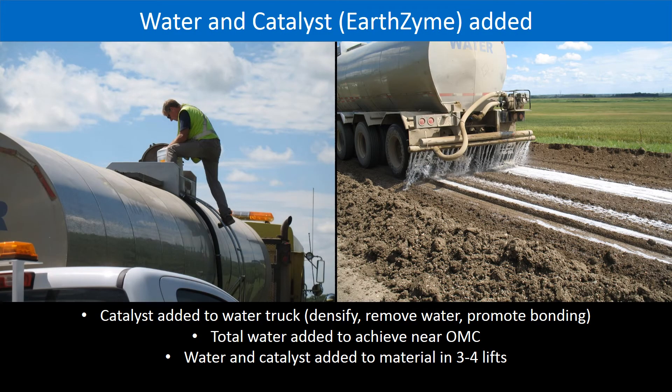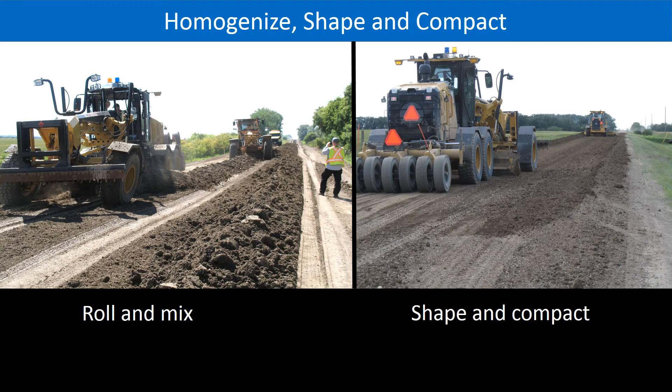The next step is to calculate the amount of water required to bring the new road material to near-optimum moisture content. The required amount of water is added to a large water truck, and a catalyst is added to the water and mixed. The water and catalyst are then added to the road material in typically three lifts, with the water truck depositing one third of its load into each lift. The next step is to thoroughly mix the road material, water, and catalyst, accomplished by rolling the material with the blade of the grader back and forth across the road three or four times.